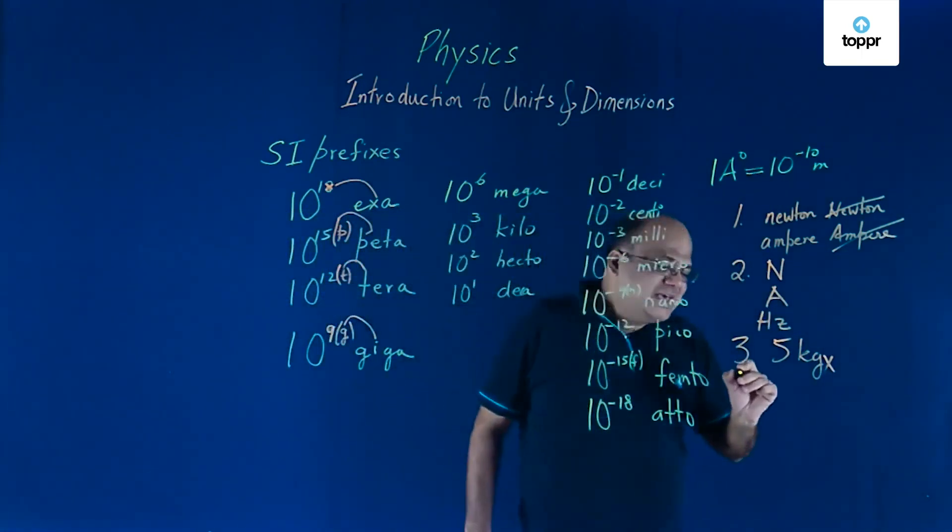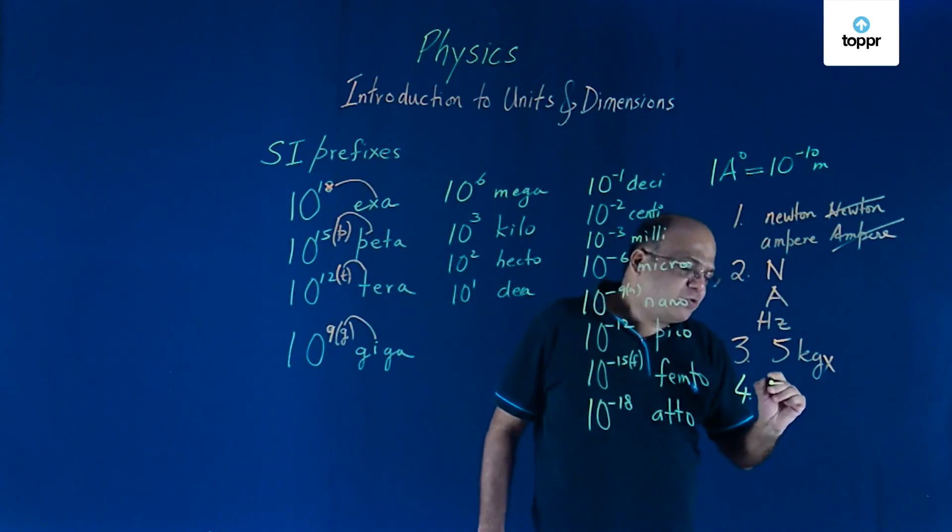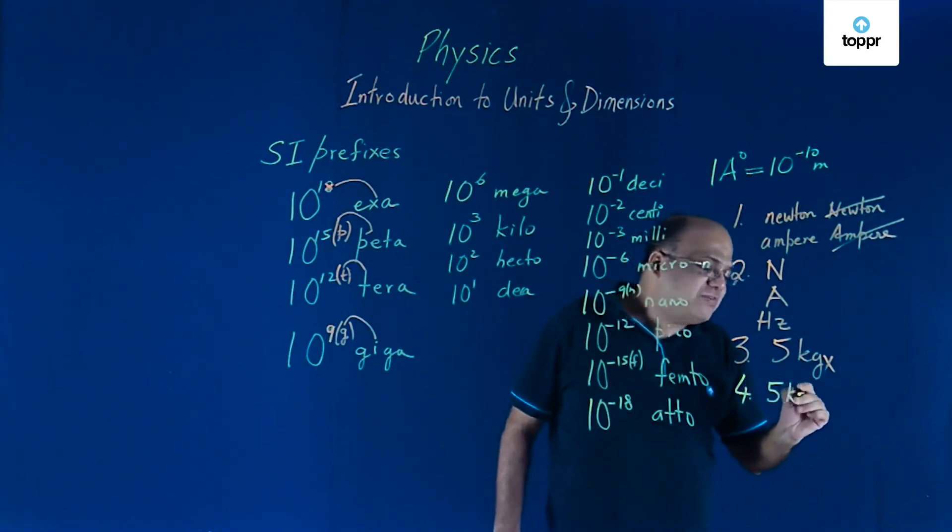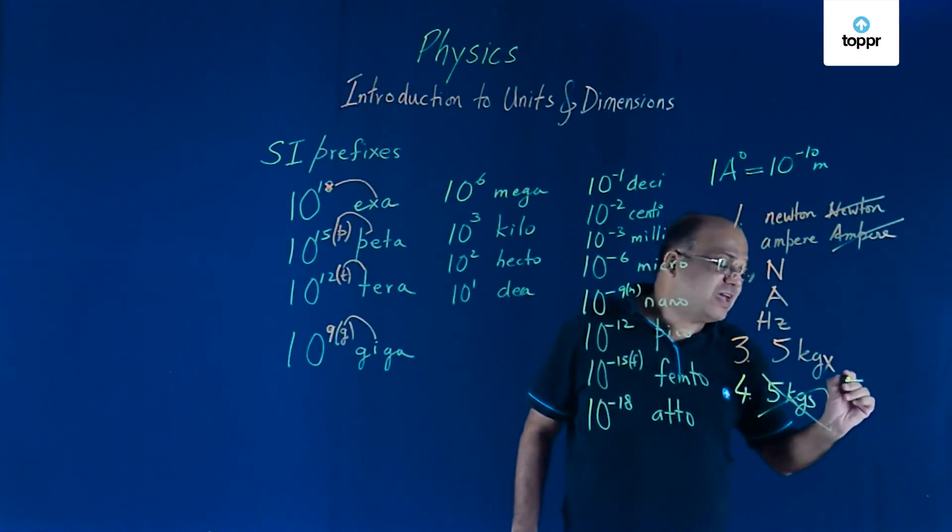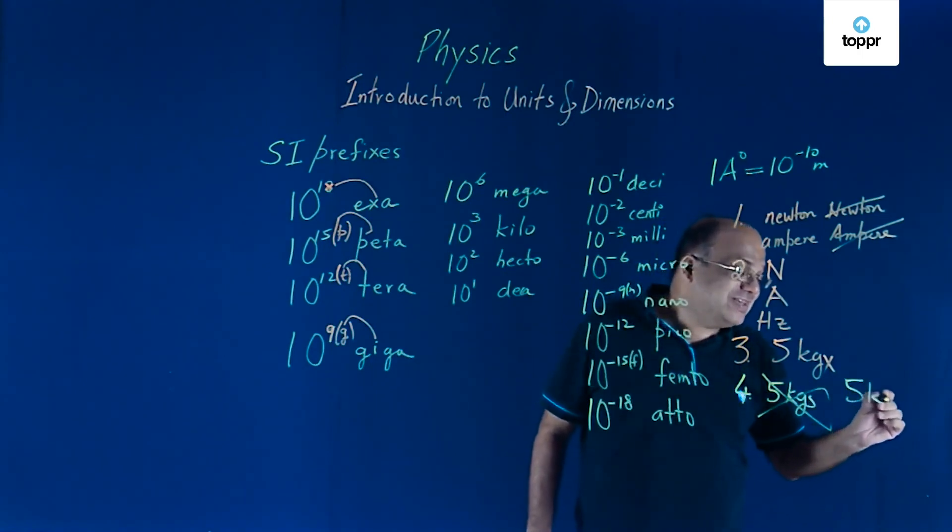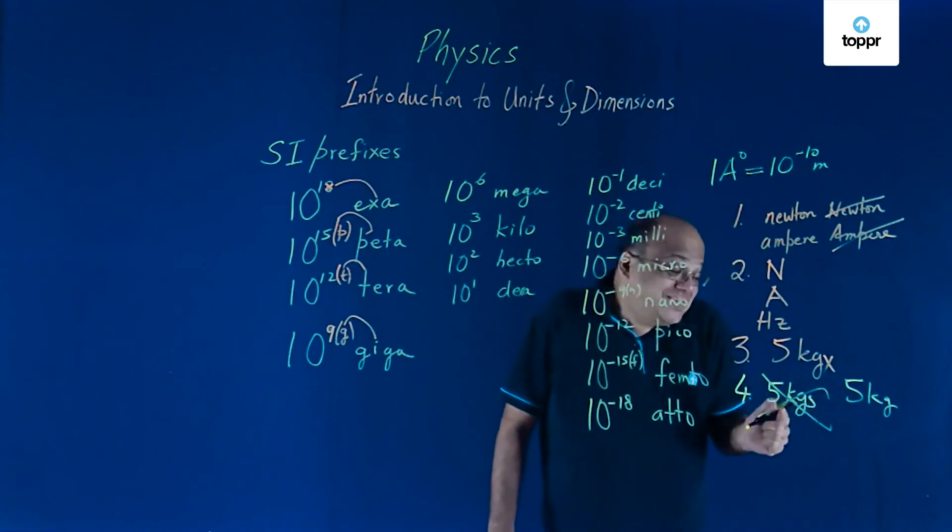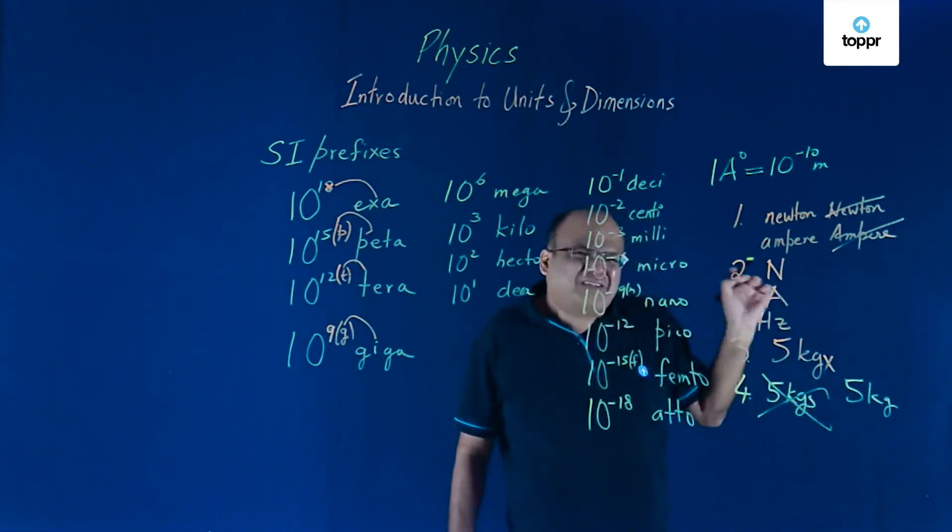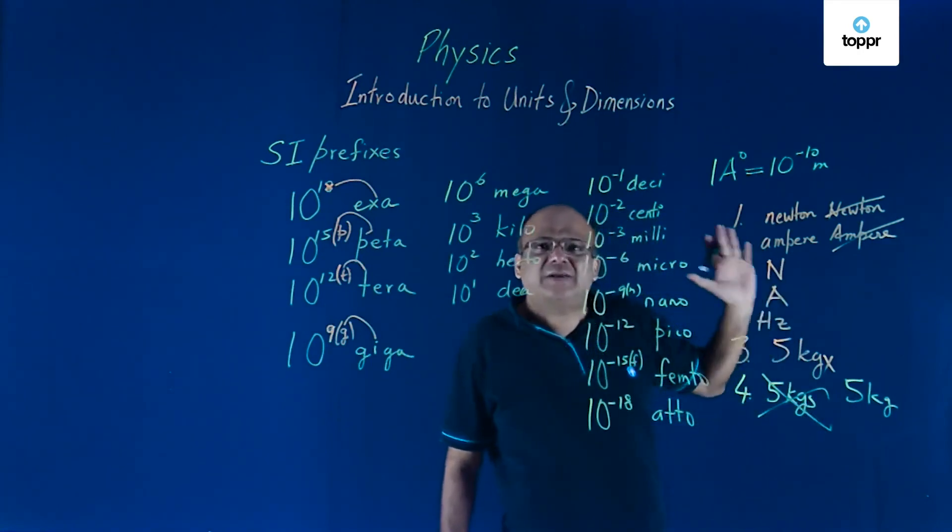And the last rule. Symbols are not written in plural form. We don't write 5 kgs. That is wrong. We just write 5 kg. In fact, this can mean something else. Kg into seconds. So symbols are not written in plural form.